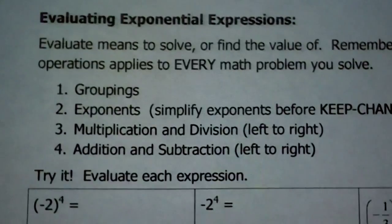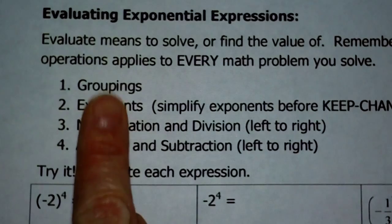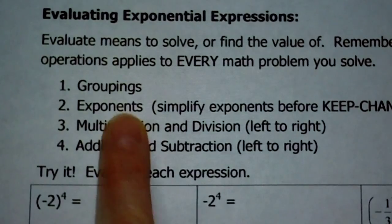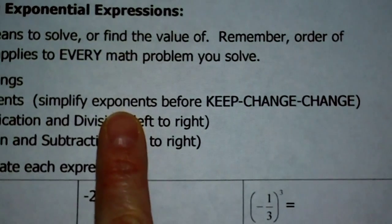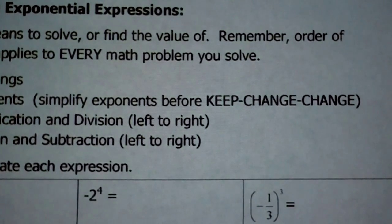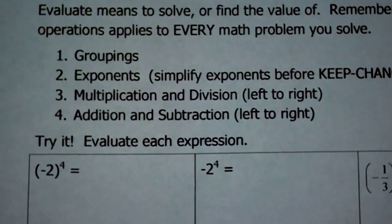You do need to remember that order of operations applies to everything in math. Number one, you have to do anything that's in parentheses, brackets, braces, absolute value symbols — any kind of grouping symbol, what's inside has to happen first. After that, we need to take care of exponents. You need to simplify exponential expressions before you keep-change-change, because sometimes it will make a difference. And second to last, multiplication and division from left to right, and lastly addition and subtraction from left to right.